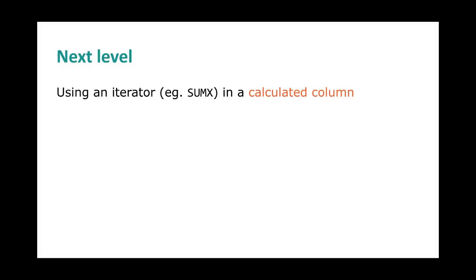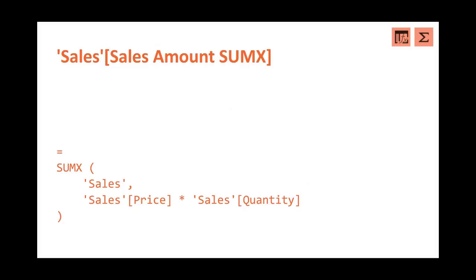Let's proceed to the next level. Can we use an iterator like SUMX — which we just used in a measure to get a row context — inside a calculated column? What if you use a measure inside a calculated column? Let's take a look. We have the sales amount again, and I calculated it with SUMX — iterating over the sales table and calculating price times quantity. What will be the outcome? Will every row show its individual sales amount, or something else? If you're watching the recording, pause and think about it.